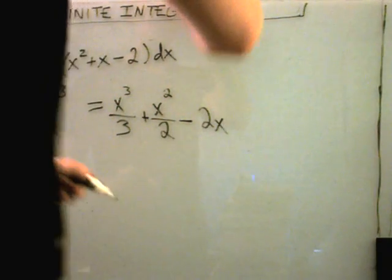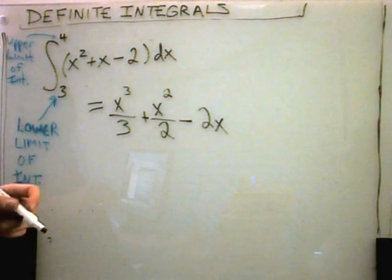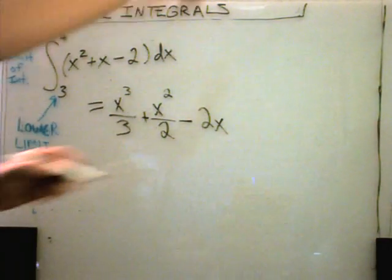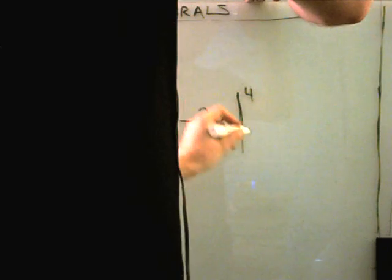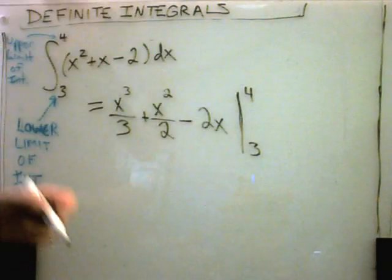And in these problems, we'll leave off the plus c. We'll talk about why in just a second. Now we make a little bar over here. 4 and 3 are upper and lower limits of integration, and this is just reminding us now to plug them in.